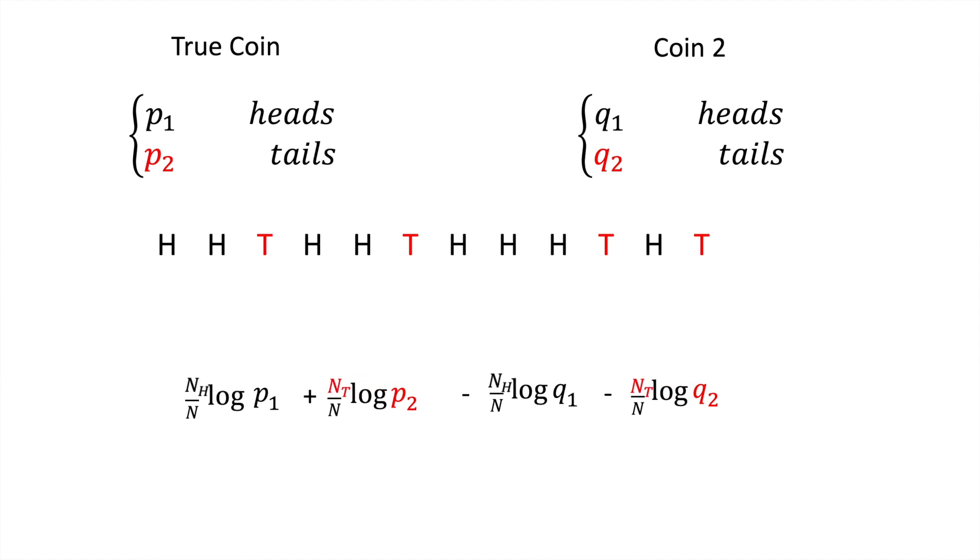Note that if observations are generated by coin 1, then as the number of observations grow to infinity, we expect the proportion of heads to tend to p1 and the proportion of tails to tend to p2.